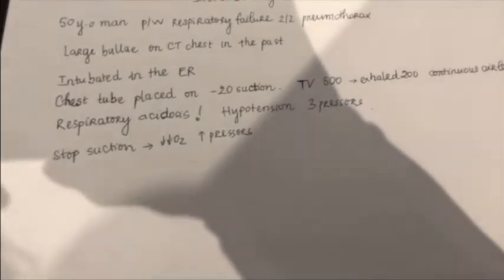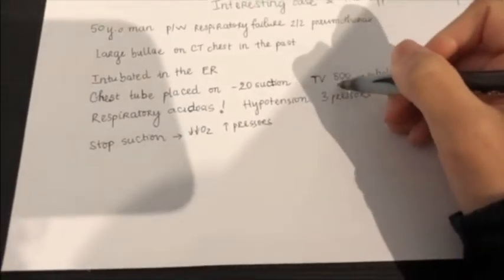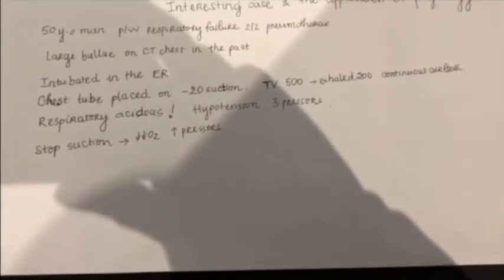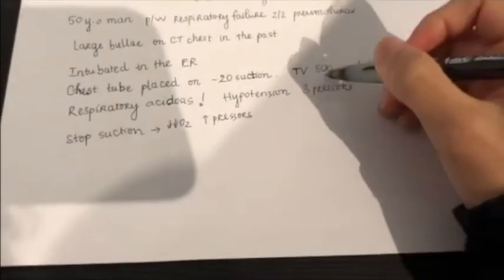He was placed on volume assist control with a tidal volume of 500. At the time that I saw him, even though he's on a tidal volume of 500, his exhaled tidal volume is only 200. He has continuous air leak in the atrium chamber, and he's on 100% FiO2, his saturation 82%, and he was significantly hypotensive. He's on 3 pressors, he had also a significant acidosis, and interestingly respiratory acidosis. His pH was 6.9, and his CO2 was up in the 100.